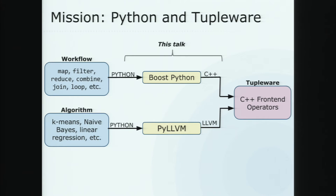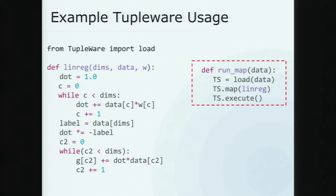I wanted to give you an idea of what a sample Tupleware usage would look like. You have a linear regression algorithm here — don't pay too much attention, there's probably a typo in there. But if you look at the actual code being compiled, you can get a pretty good sense of what subset of Python you need to support. You basically don't need fancy Python functionality like decorators or list comprehensions. The usage of Tupleware is for machine learning algorithms, which tend to be very easily optimizable mathematical functions. So I chose to focus first on primarily static type-inferable code. In the red box, you have how you would use the Tupleware package: load your data, map your algorithm, and then call execute.